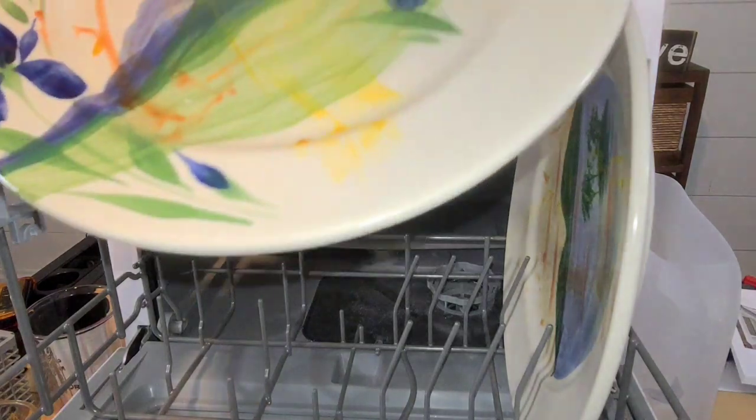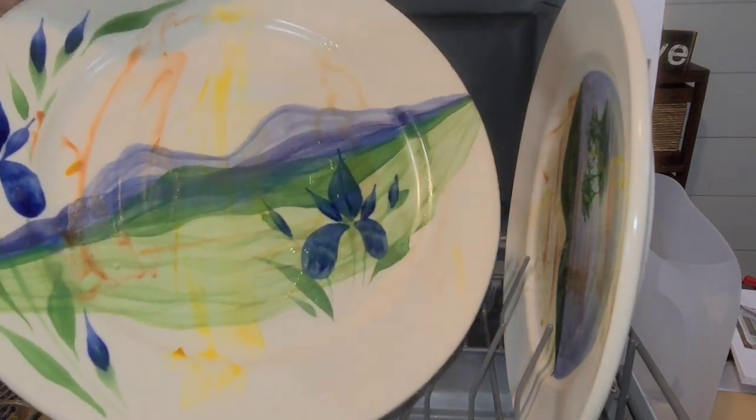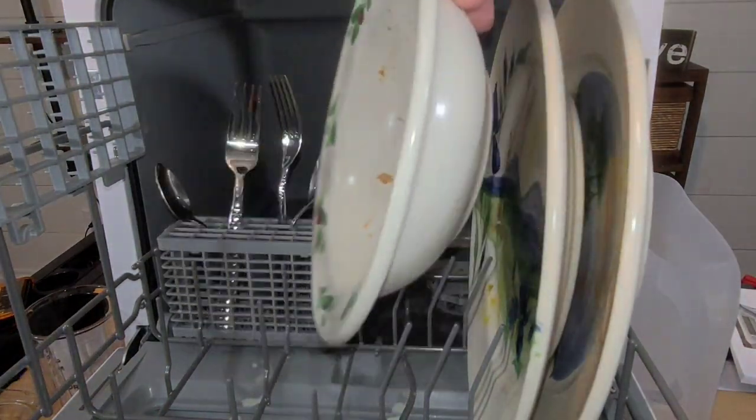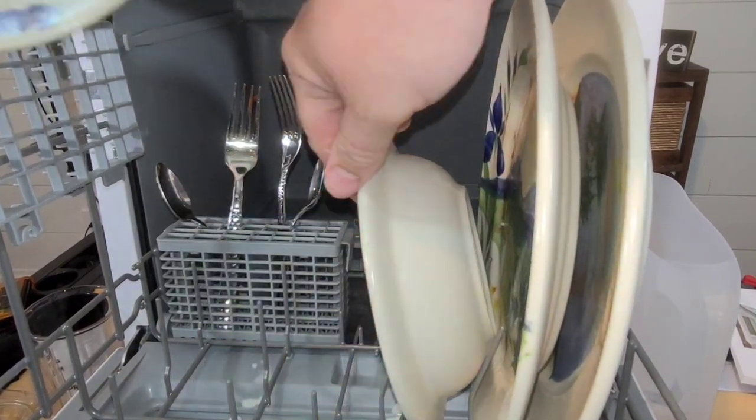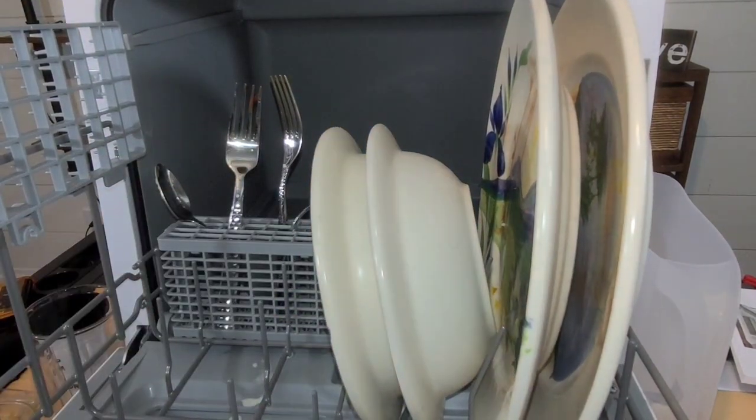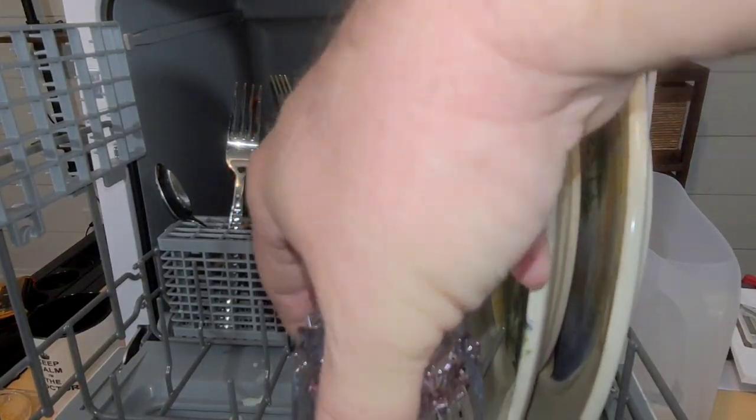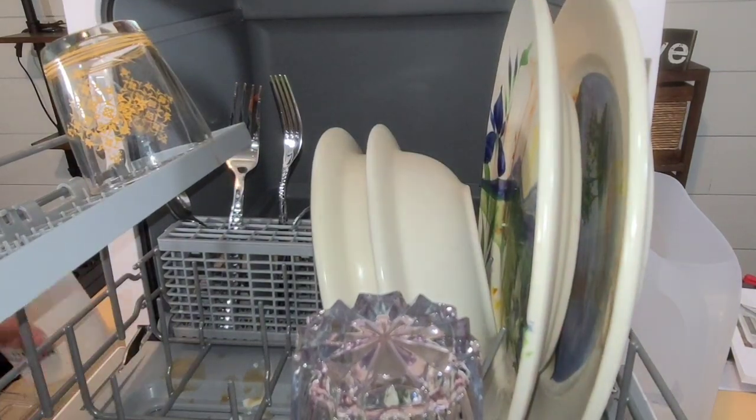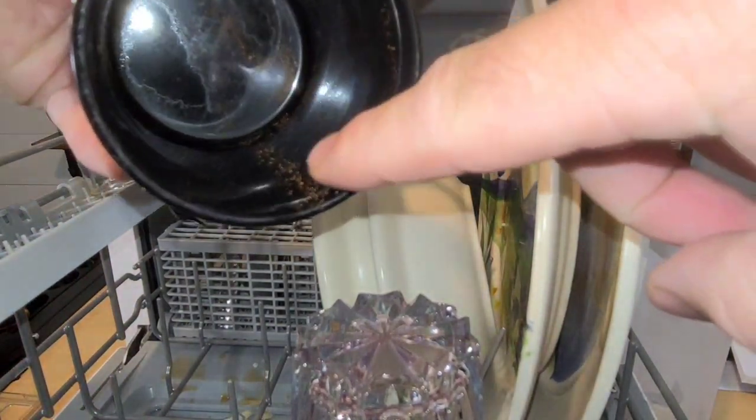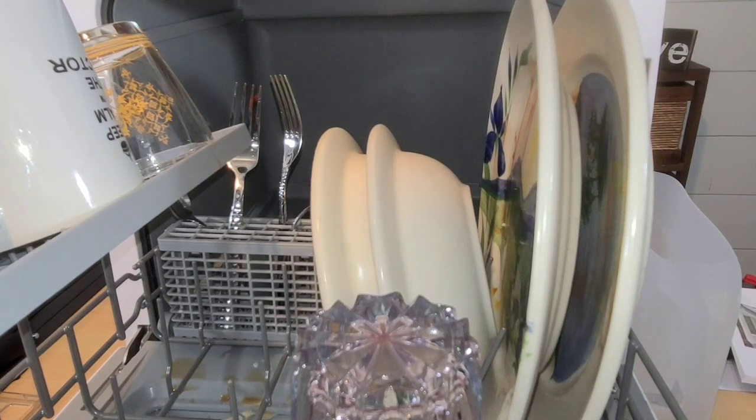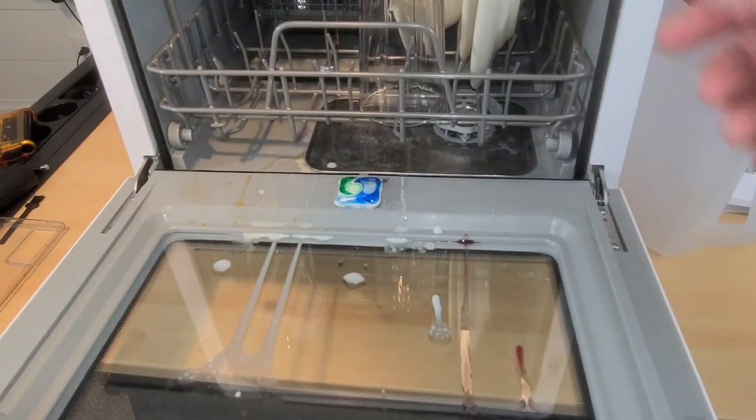Now we're going to put this dishwasher to the test. I've got two plates here that have ketchup, mustard, and syrup on it. So we're going to put those right in there. We've got some forks and spoons. I've got cereal bowls that we had cereal on, I'm going to put those right over here. Got some milk dripping down in here. We have a cup that had some wine in the bottom. I've got another cup that had some coffee at the bottom, we're going to put that up here on the top rack. And then a coffee cup that has some cinnamon dried in on there. It's not a totally full load but it's got a lot of dirty dishes to get clean. We're going to put our soap right there where it goes.